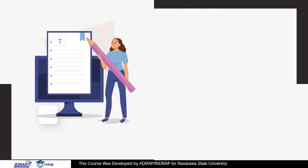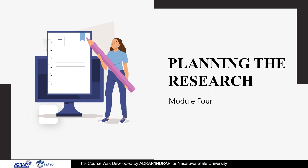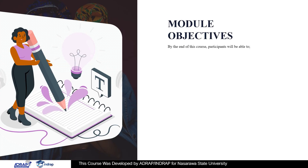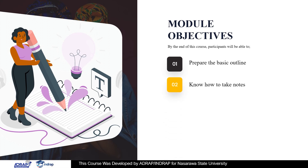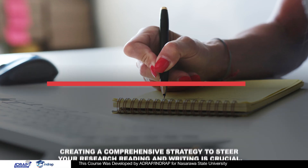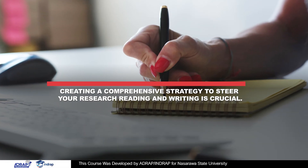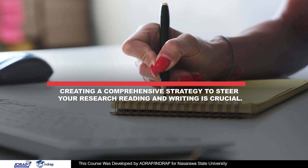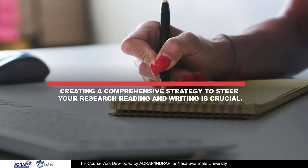Hello. Welcome to the fourth module of this course. In this module, we will be looking at how to plan a research. By the end of this module, you should be able to: one, prepare the basic outline; two, know how to take notes; and three, identify what to take notes about. Creating a comprehensive strategy to steer your research, reading, and writing is crucial.